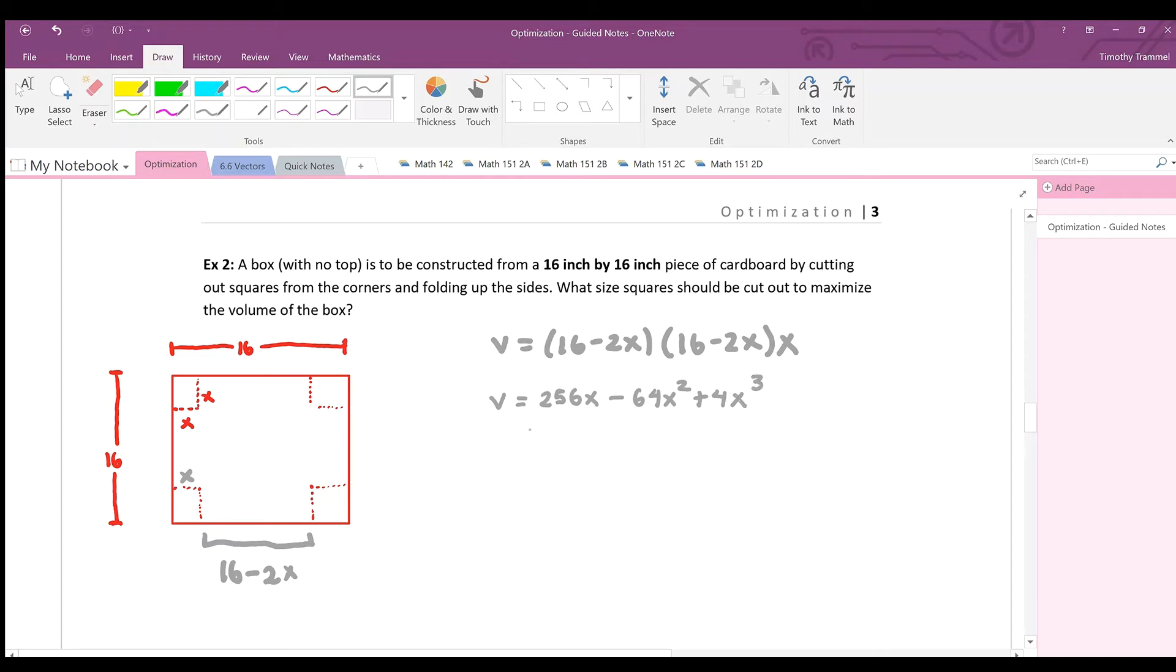And what we want to do with this is differentiate it, right? We want to either use the closed interval test or use our first or second derivative to help us determine whether we have a local minimum, local maximum, and where that's happening at. But before we do that, we should probably determine the domain here. We want to determine the domain of our objective function.